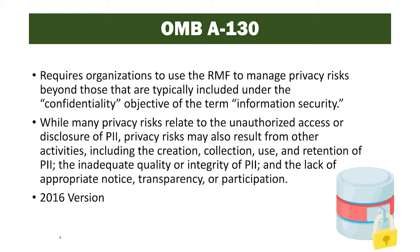This comes from the 2016 version of A-130. In this case, we don't just think about the confidentiality of the information. We also have to think about whether individuals can opt out of participating in certain activities with their information, or whether appropriate notice is given to individuals if their information is going to be used for something, or if it's been inadvertently disclosed. These levels of transparency need to take place, even though they're not necessarily directly tied to the confidentiality term defined in RMF.